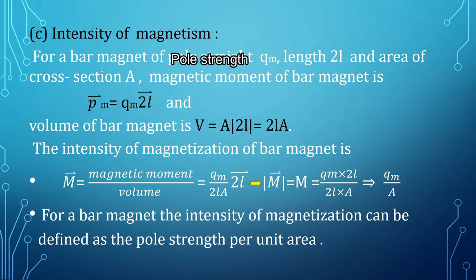For a bar magnet with pole strength qm, length 2l, and cross-sectional area A: the magnetic moment is pm vector equal to qm into 2l vector, and the volume V equals A into 2l. So intensity of magnetization M vector equals qm into 2l vector divided by 2l into A. The 2l cancels, leaving M equal to qm divided by A — that is, pole strength per unit area.